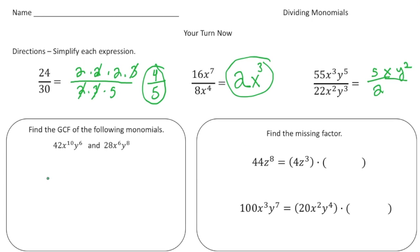The next one: find the greatest common factor of the monomials, following the three-step process. Step one: the GCF of 42 and 28 is 14. Step two: we have x to the tenth and x to the sixth — take the smallest power, x to the sixth. We also have y to the sixth and y to the eighth — take y to the sixth. So the GCF is 14 times x to the sixth times y to the sixth.